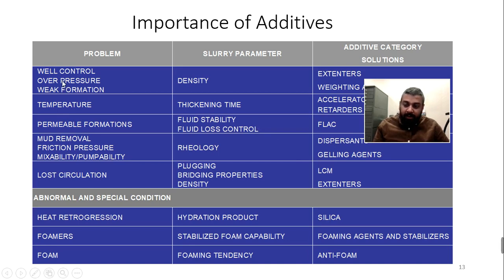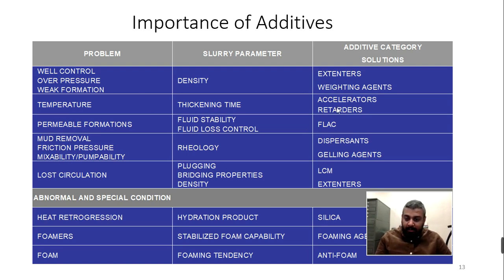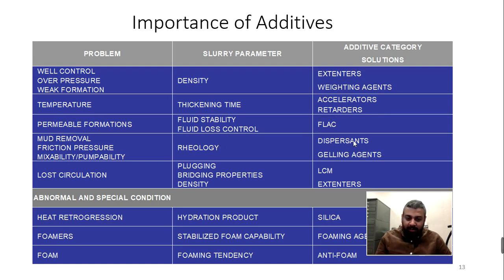For over-pressured or weak formations, density is the parameter we control. For high-temperature issues, thickening time can be too short, so we need accelerators and retarders to adjust it. For highly permeable or fractured formations, we use fluid loss control agents. If there's mud contamination or the wellbore wasn't cleaned properly, we change the rheology using gelling agents. For total loss circulation zones, we use loss circulation materials.